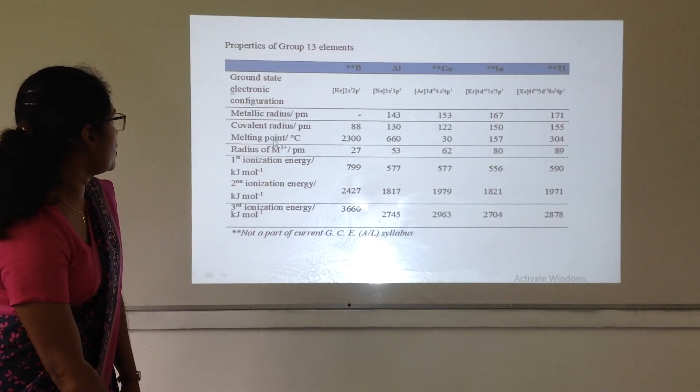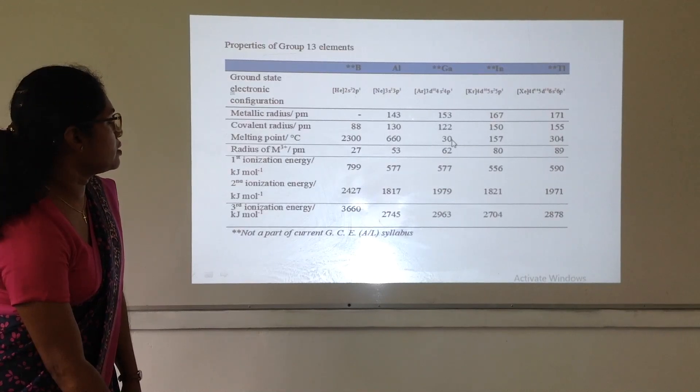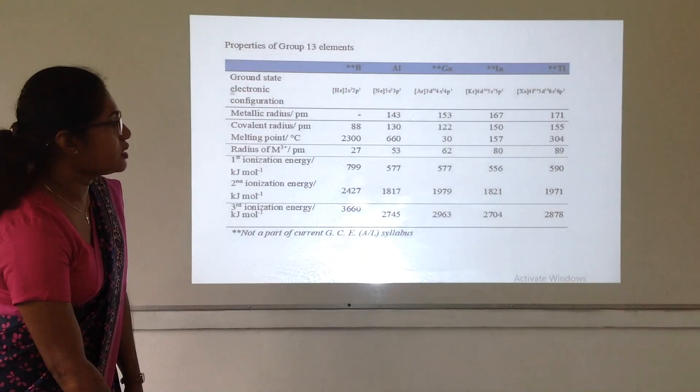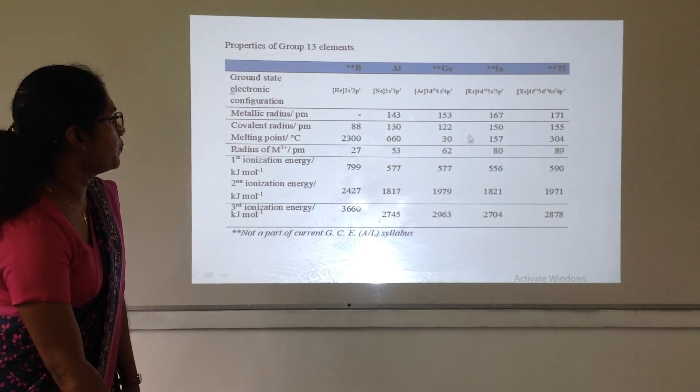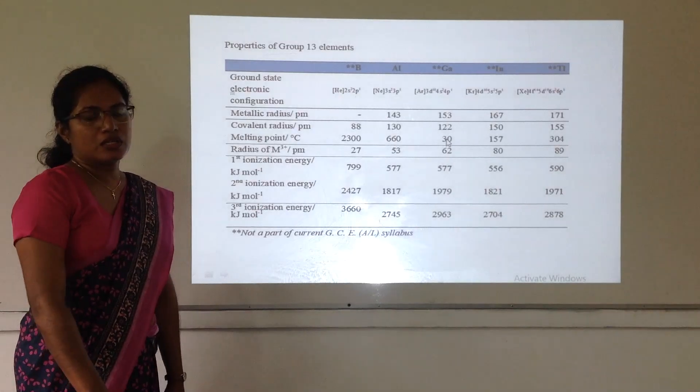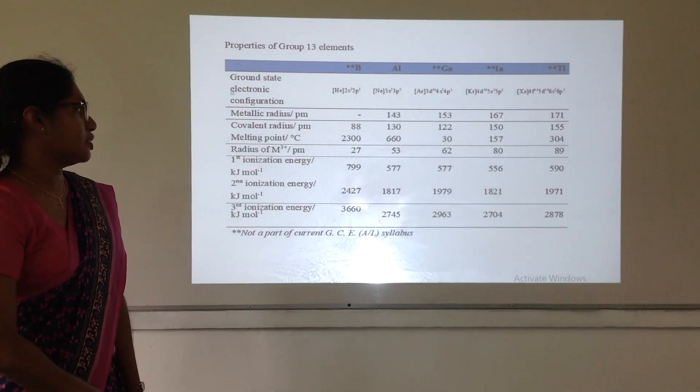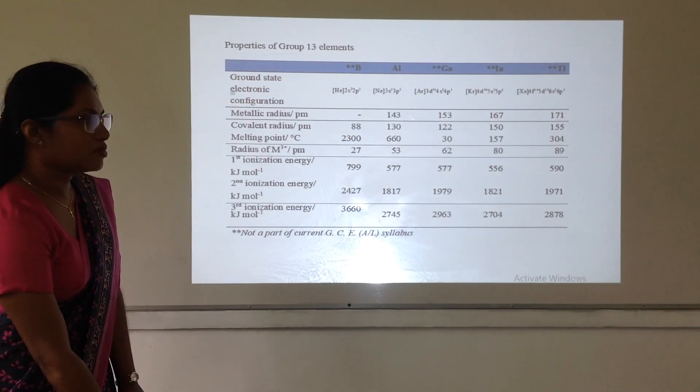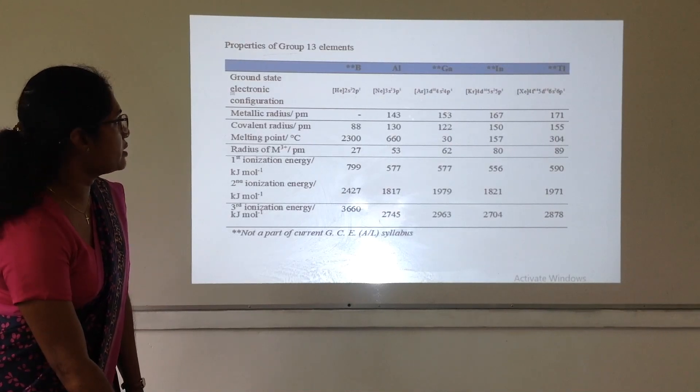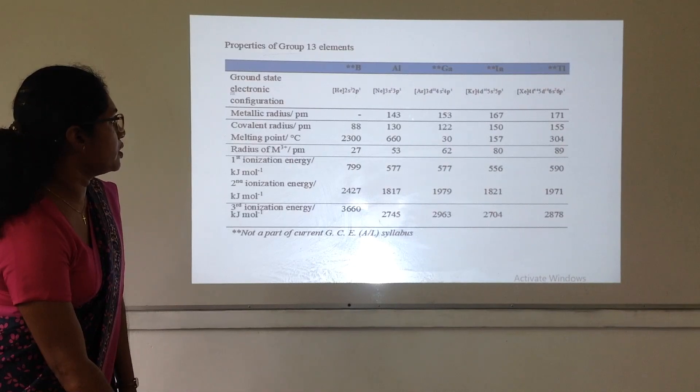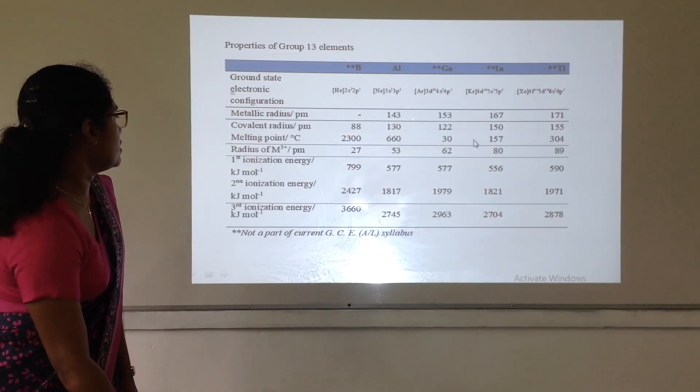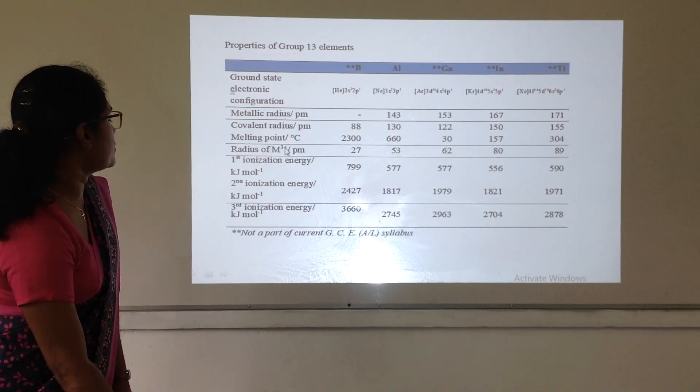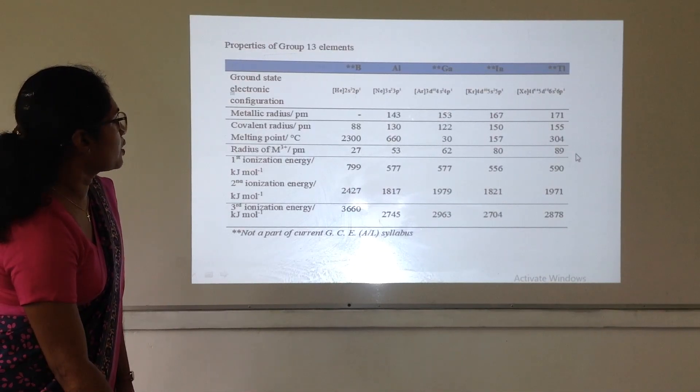And if we consider about the melting point, that is also different in aluminum and gallium. Because gallium has the lowest melting point. Because gallium shows unusual crystal structure. So, that crystal structure has very weak bonds.